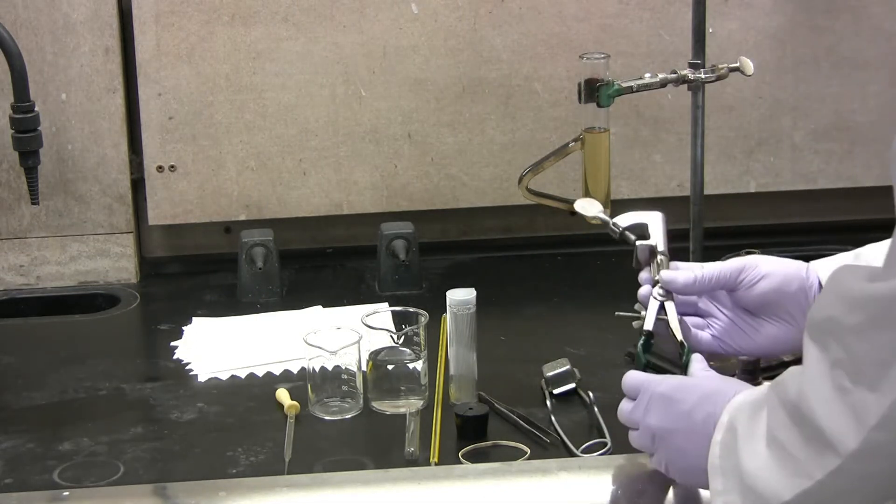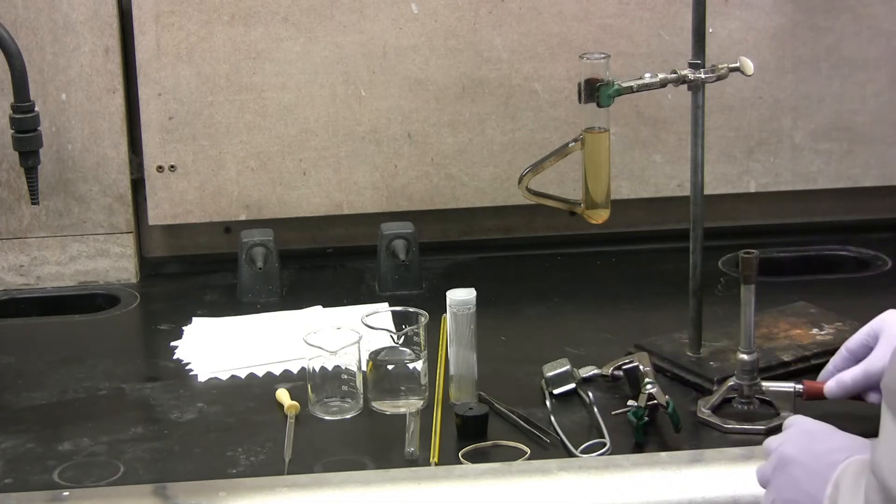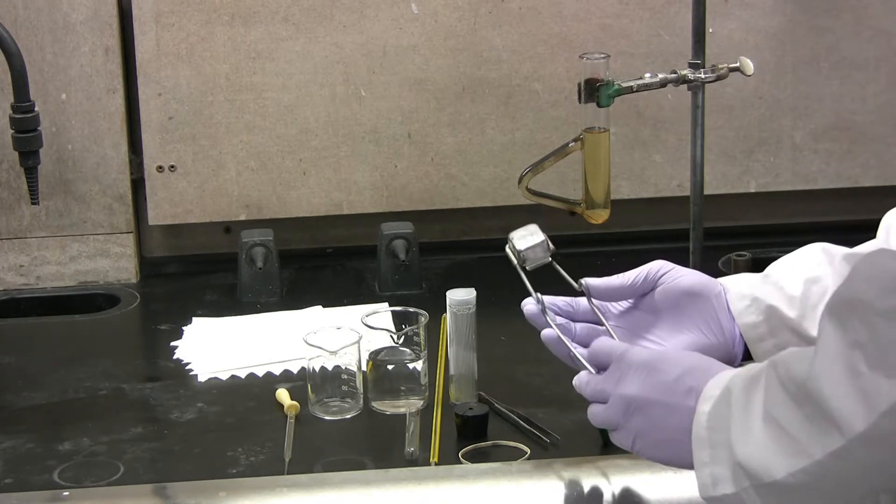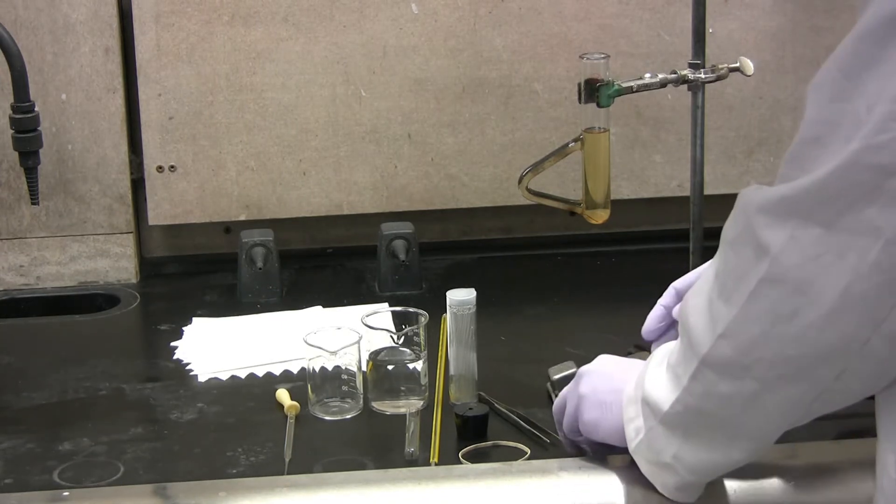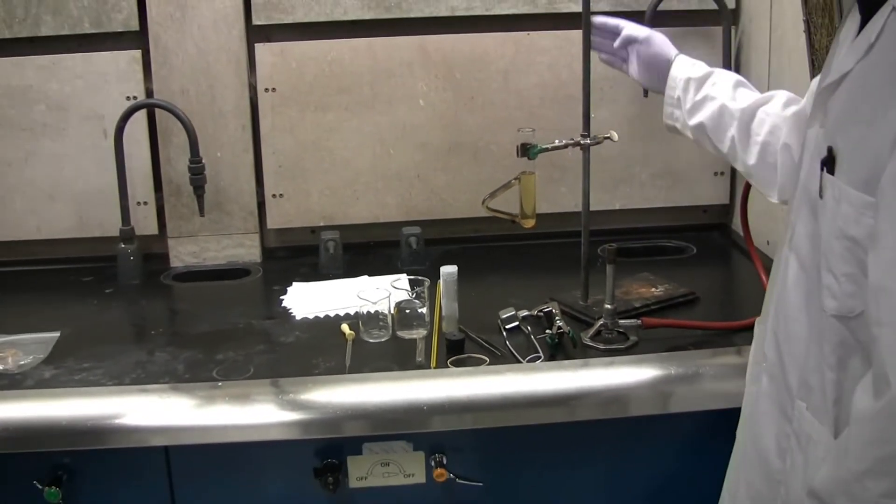Tweezers, a clamp, a Bunsen burner and a striker. You will also require a Thiele tube as well as a retort stand.